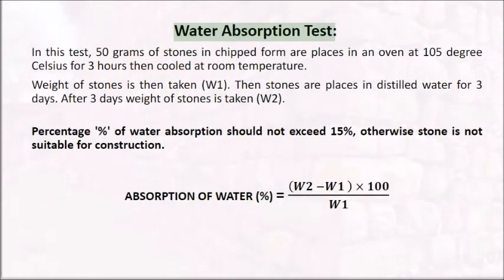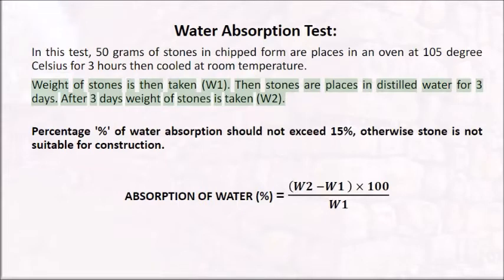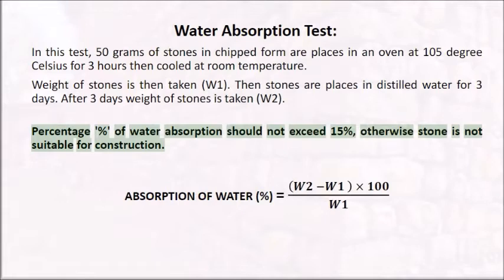Water Absorption Test: 50 grams of stones in chipped form are placed in an oven at 105 degrees Celsius for 3 hours then cooled at room temperature. Weight of stones is then taken (W1). Then stones are placed in distilled water for 3 days. After 3 days weight of stones is taken (W2). Percentage of water absorption should not exceed 15%, otherwise the stone is not suitable for construction.